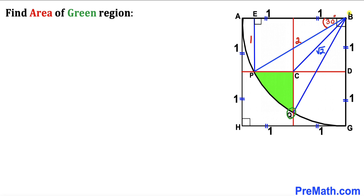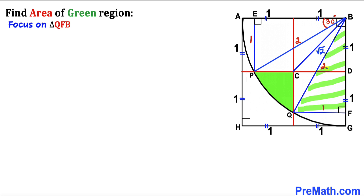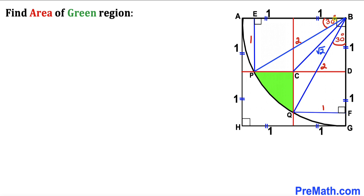I have also connected point Q with B and dropped perpendicular QF. QB is the radius as well, so it is 2 units, and side length QF is 1 unit. In right triangle QFB, the smallest leg is 1 and the largest leg is 2, so angle QBF is 30 degrees. The whole corner angle is 90 degrees; subtracting 30° and 30° gives angle PBQ = 30 degrees.